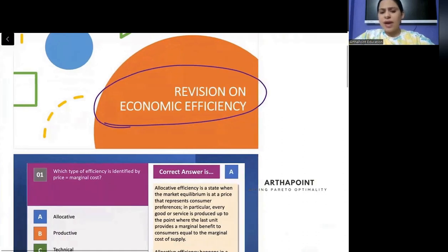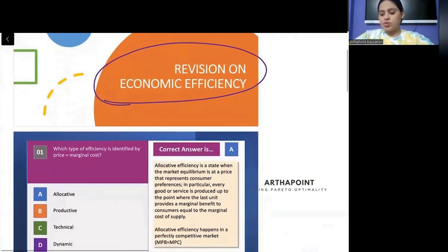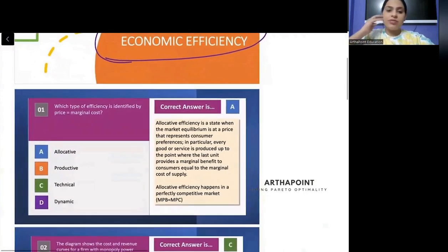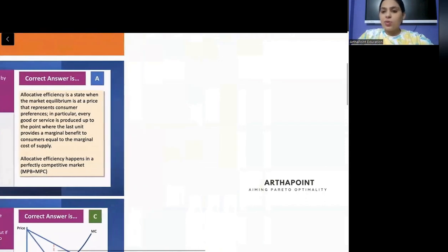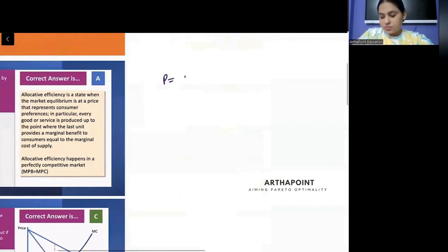And some aspects of producer theory also, let's take the first question. What type of efficiencies identified when P is equal to MC? So when P is equal to MC, it implies I am in a perfect competition.